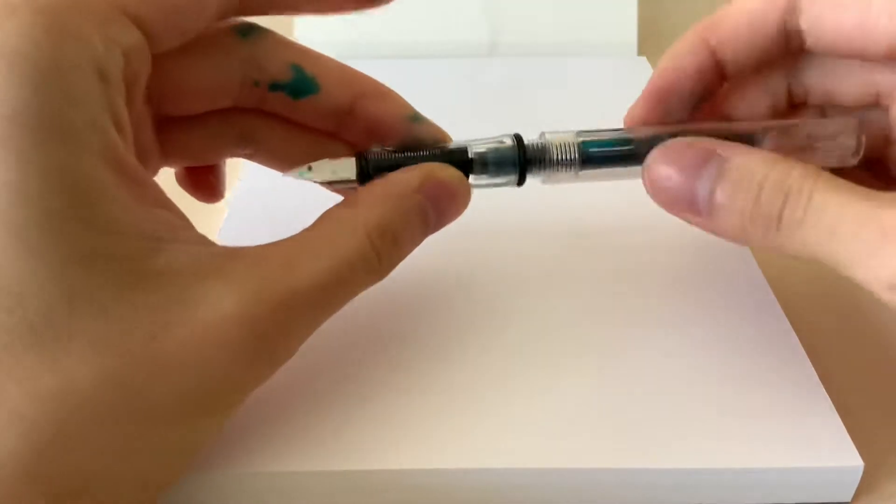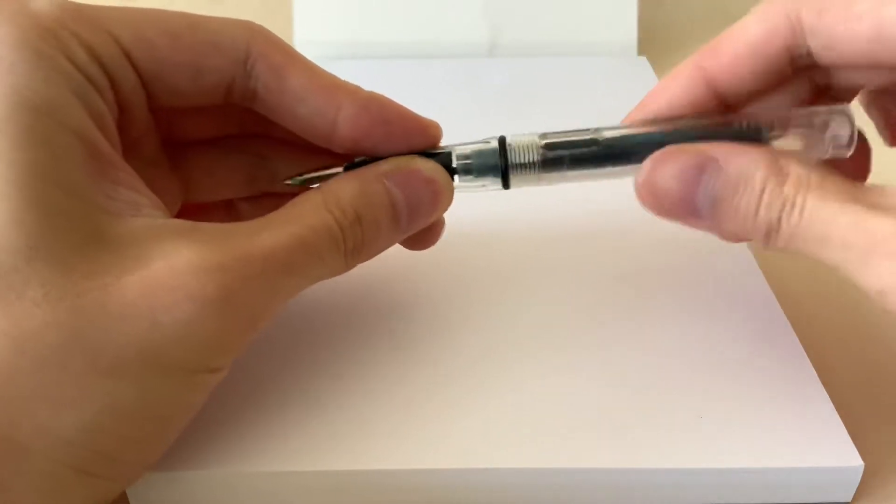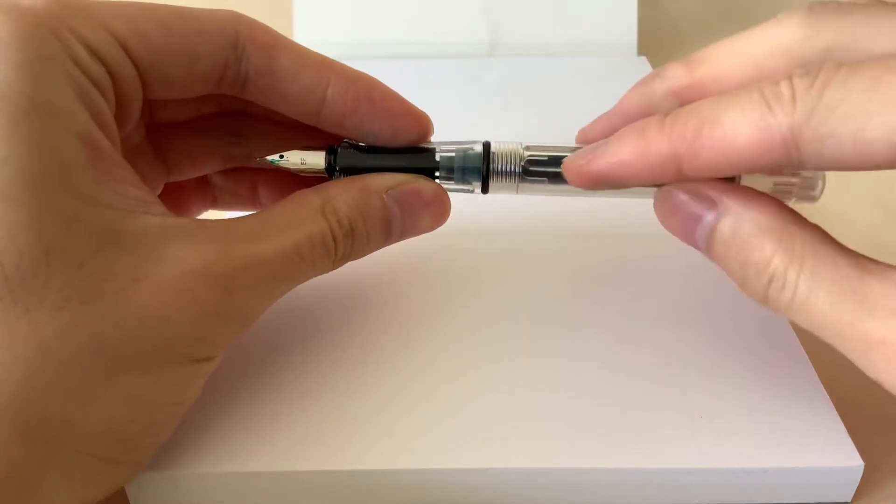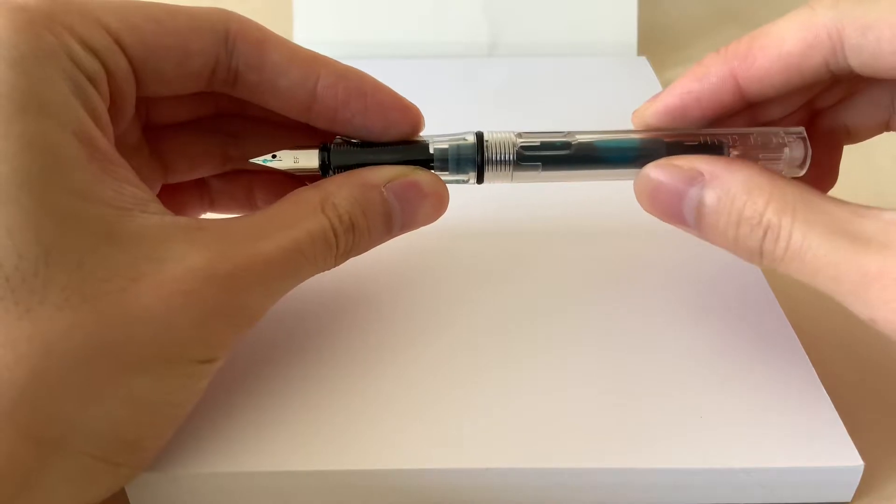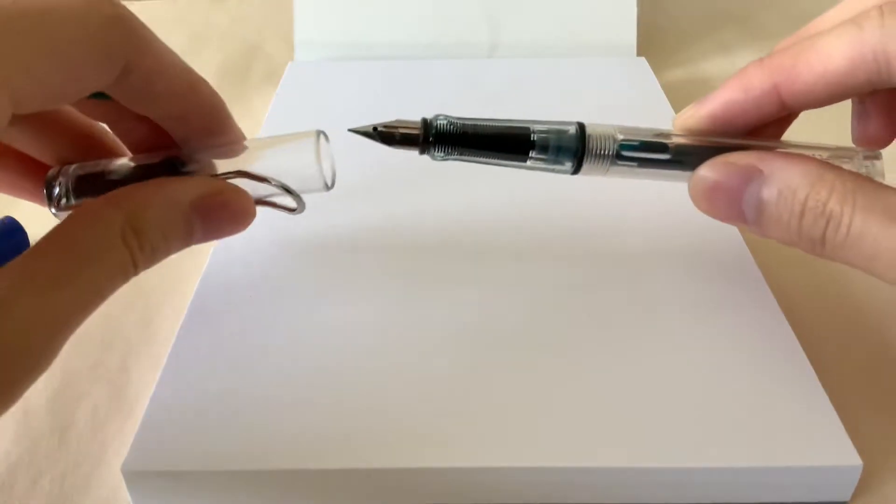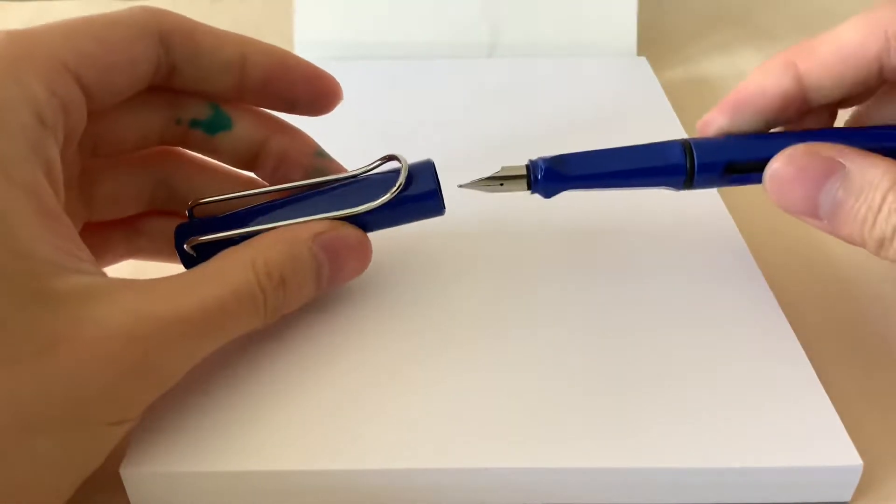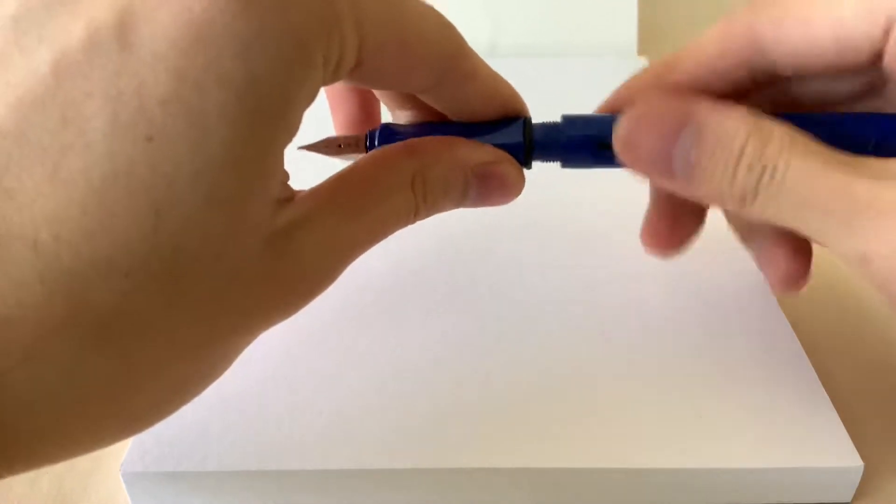But what I do notice is that when you screw on the body of the pen, it doesn't actually align when you screw on tightly. Whereas if you go to the actual Lamy Safari over here, one of the things is that the way that it's supposed to be made is that it aligns perfectly.